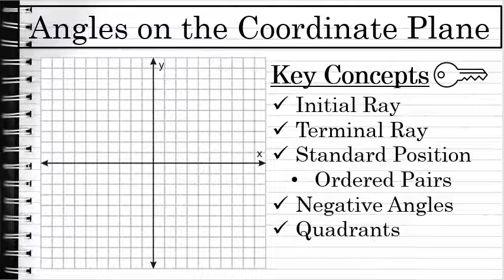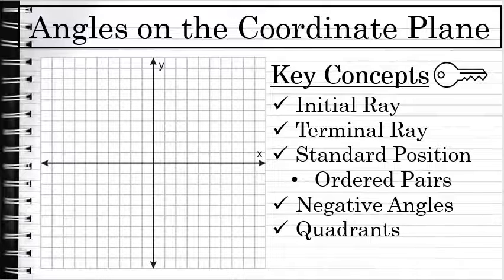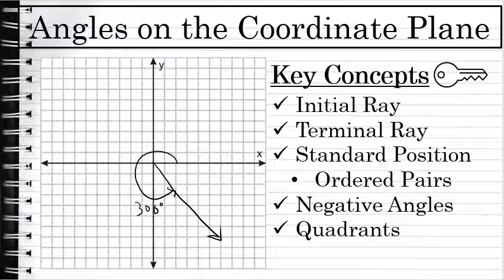Angles can also be defined by their quadrant, and basically that depends on where the terminal ray is. If the terminal ray passes through the first quadrant, you would say that angle in standard position is a first quadrant angle. If the terminal ray is in the second or third quadrant — like perhaps a 200-degree angle would be — you would say that angle is in the third quadrant. This applies to negative angles as well. An angle of negative 20 degrees is in the fourth quadrant, and an angle of positive 300 degrees is also in the fourth quadrant. An angle can be defined by a quadrant, and that quadrant is where the terminal ray is located.